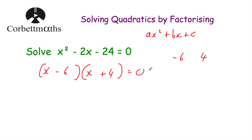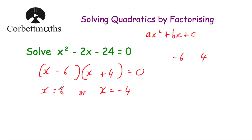These two brackets multiply together to be 0, so we factorized the left-hand side. Now we figure out when each bracket equals 0 — if two things multiply to give 0, one of them must be 0. For the first bracket, x = 6 because 6 - 6 = 0. For the second bracket, x = -4 because -4 + 4 = 0. So there are two solutions: x = 6 or x = -4.